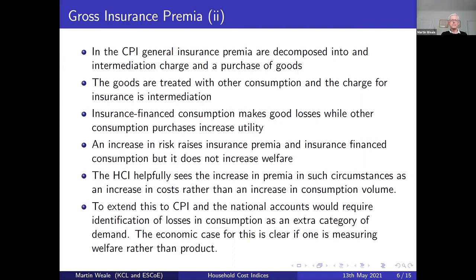In the CPI, general insurance premiums are decomposed into an intermediation charge and a purchase of goods — the charge for insurance is only the intermediation. Insurance-financed consumption makes good losses, while other consumption purchases increase utility. An increase in risk raises insurance premiums and insurance-financed consumption, but it doesn't lead to an increase in welfare. The HCI helpfully sees an increase in risk raising insurance premiums as an increase in costs rather than an increase in consumption volumes.